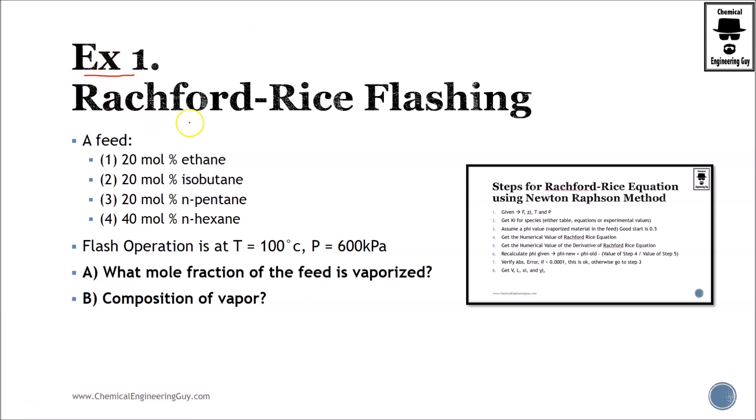Welcome to exercise number one for Rachford-Rice equation. We're going to be using flash for a multi-component system. We have a feed of ethane, isobutane, n-pentane, and n-hexane, with the following characteristics: 20-20-20, 40% hexane.